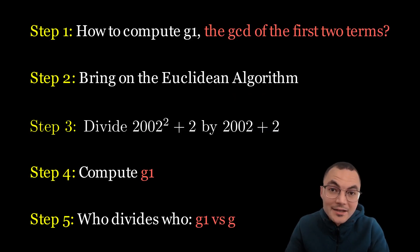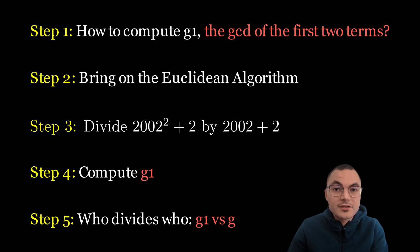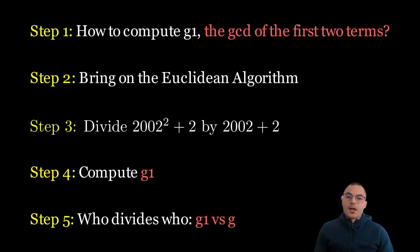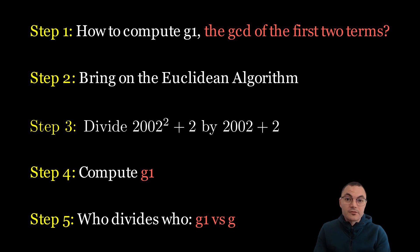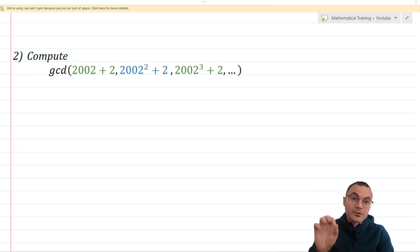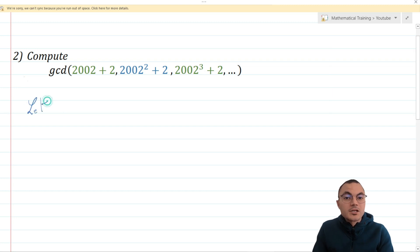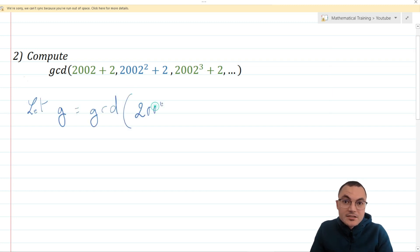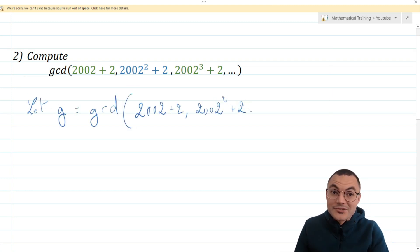Here are the steps I'll be guiding you through, so pause the video and take them as a hint if you wish. The make it easier strategy consists of solving an easier version of the problem and then going back to the original one. So what might be an easier version of this problem?